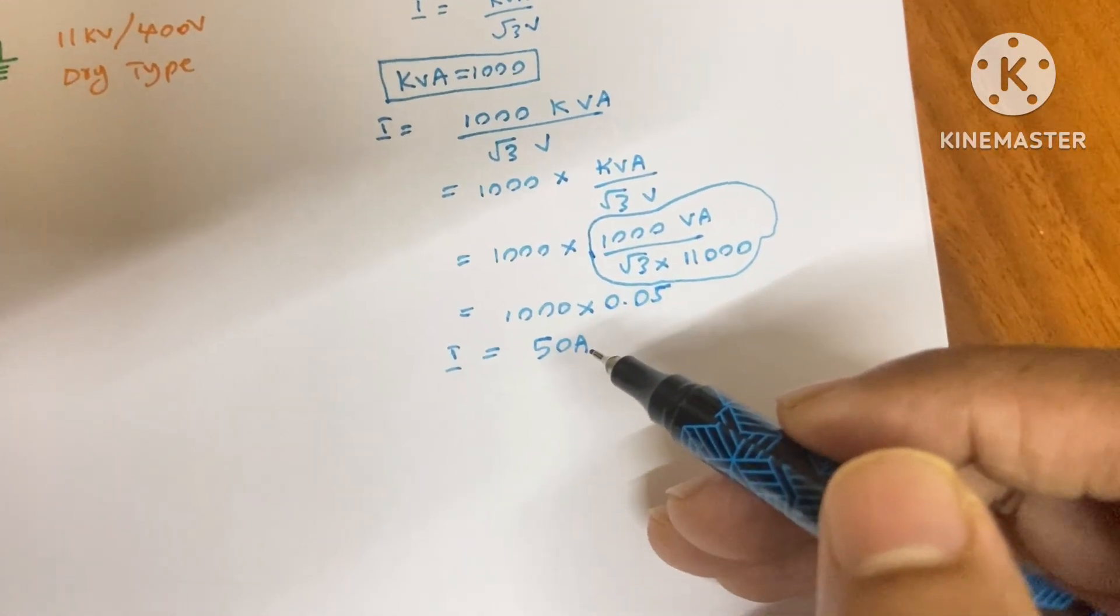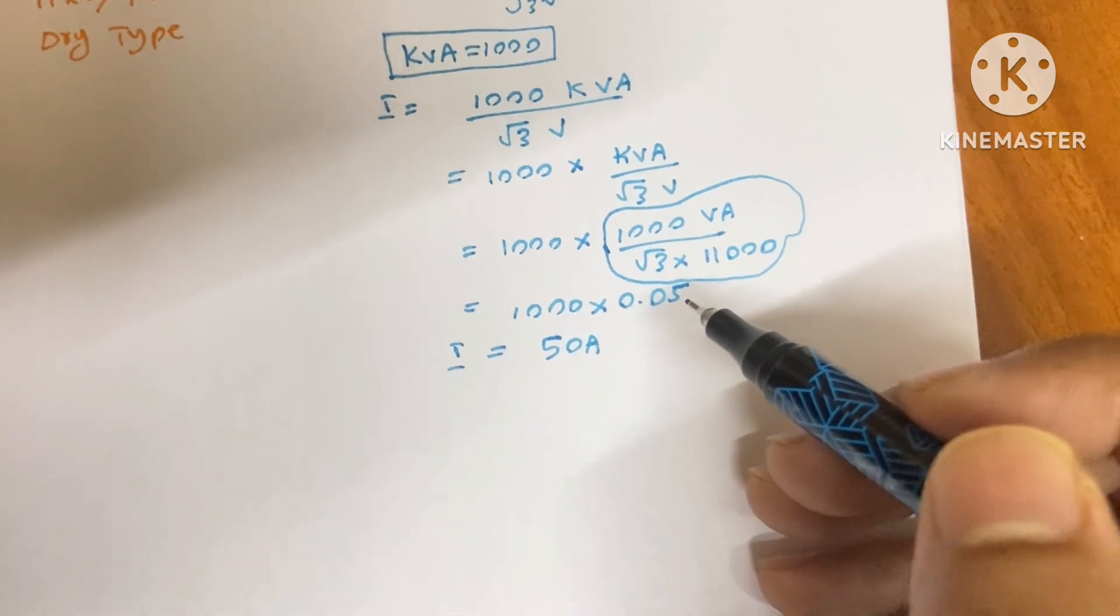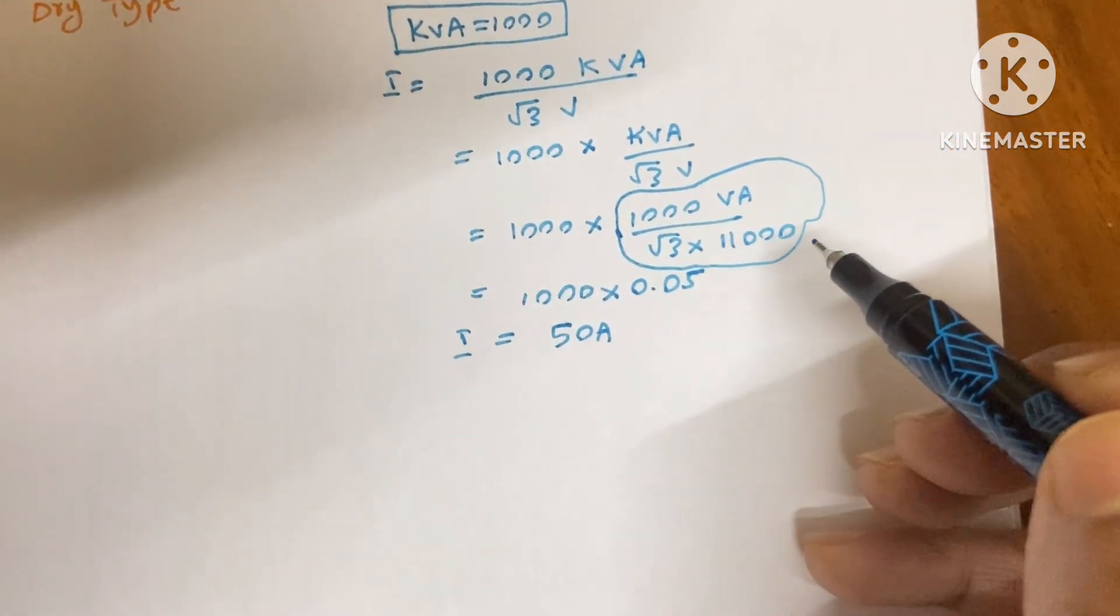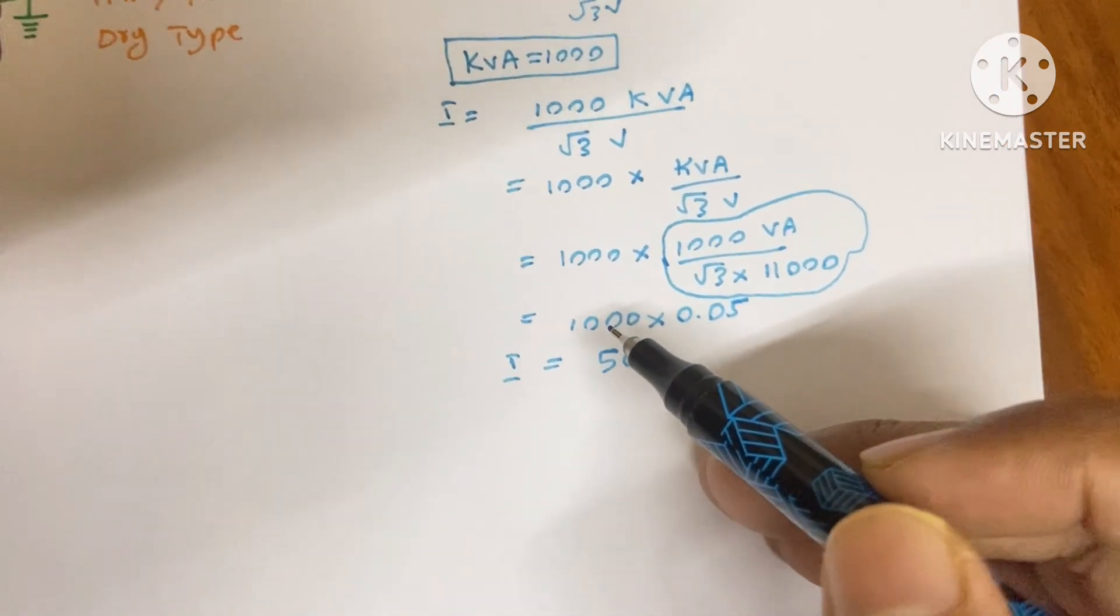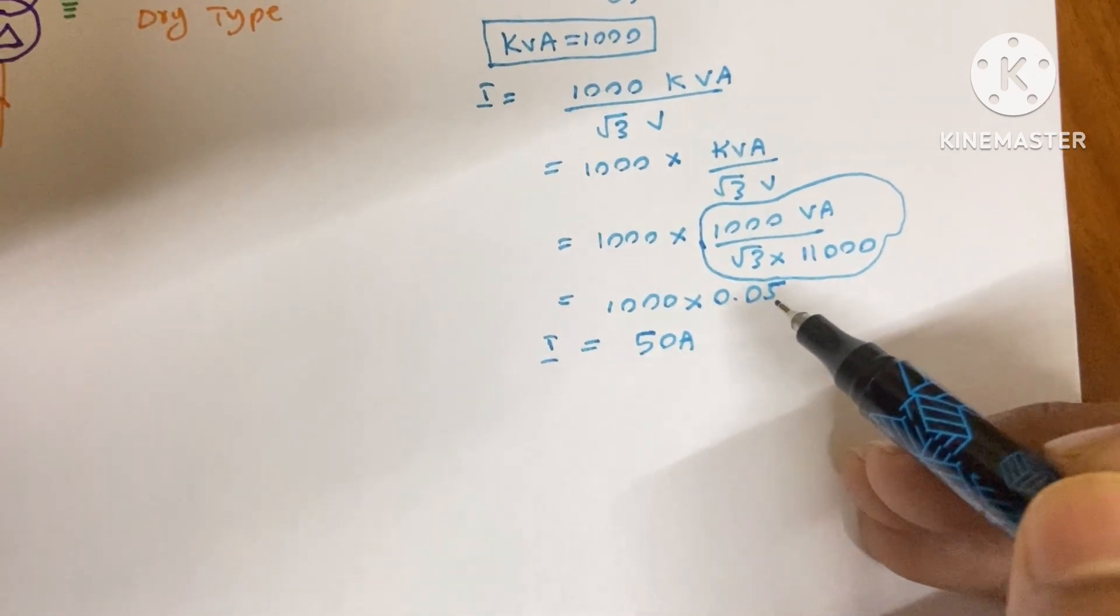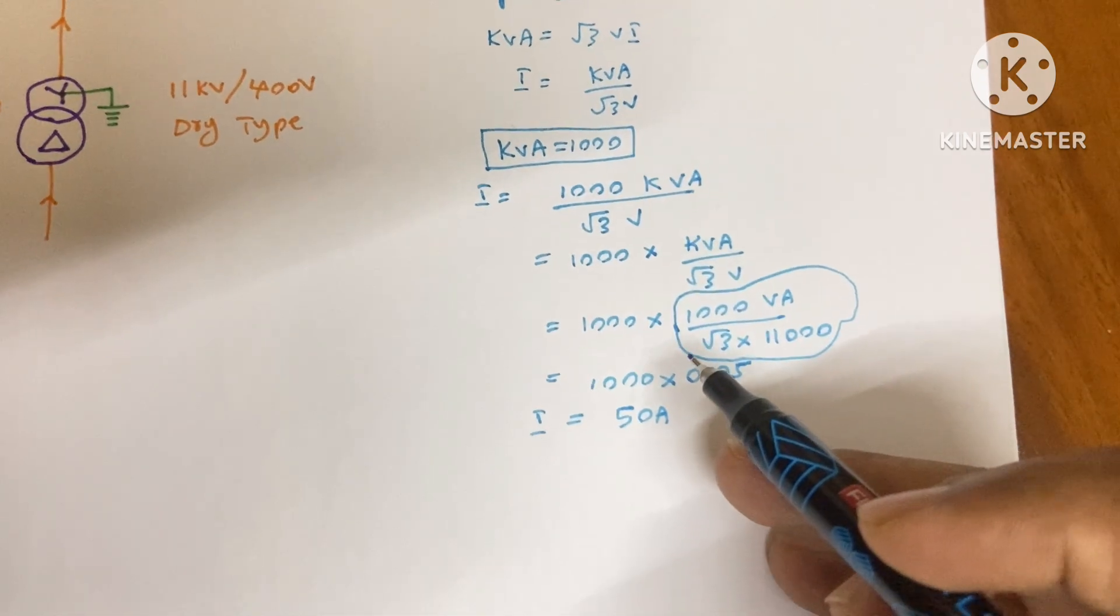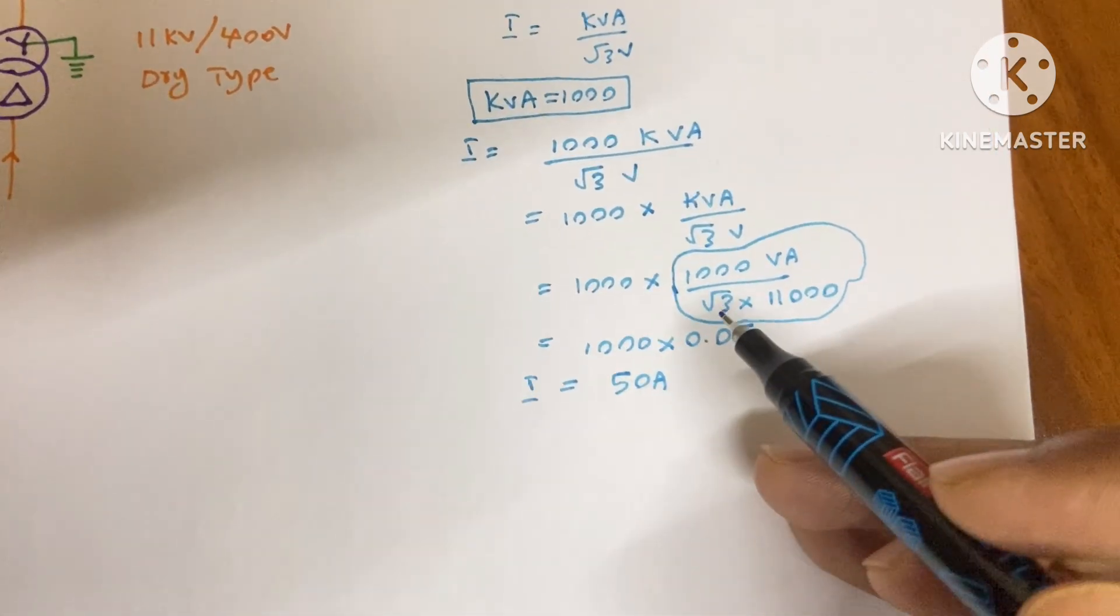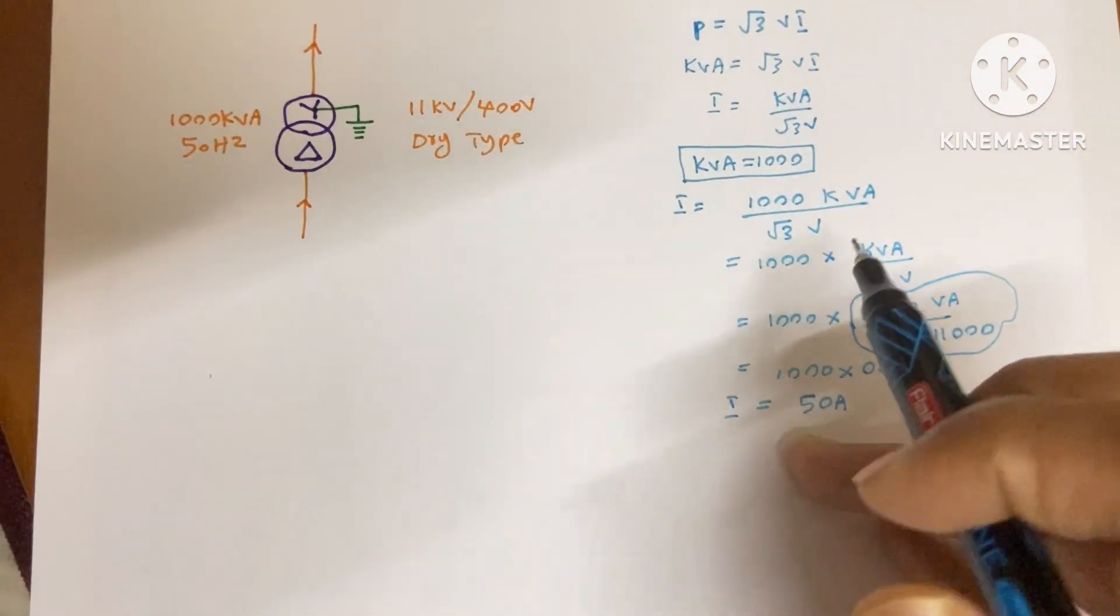So whenever you need to find the primary side current of a transformer and the primary side voltage is 11000 voltage, then you need to only multiply your kVA rating of the transformer with 0.05. You don't need to write all these equations and these things. It will waste your time.